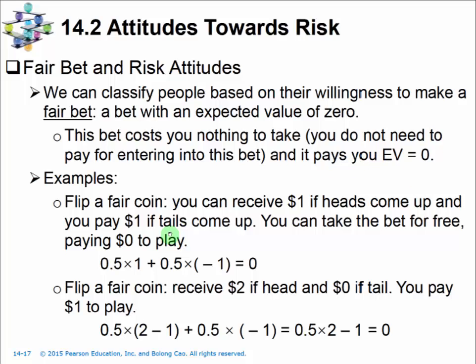Consider flipping a fair coin. You receive $1 if heads comes up, and you pay $1 if tails comes up. This bet is free — it costs you nothing. Because it's a fair coin, there's a 50% chance for heads and 50% for tails. So 50% times $1 plus 50% times negative $1 gives 0.5 minus 0.5, which equals zero — a zero expected value.